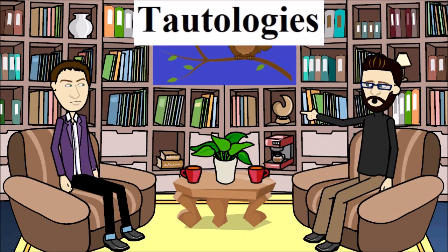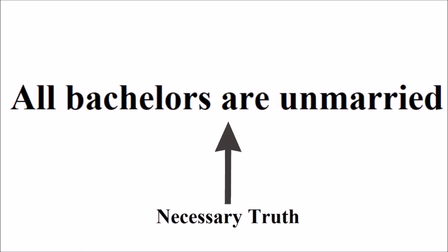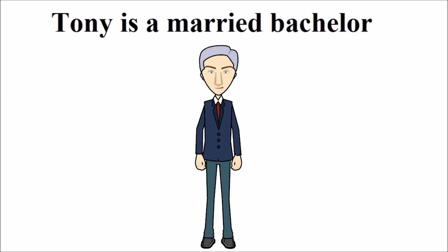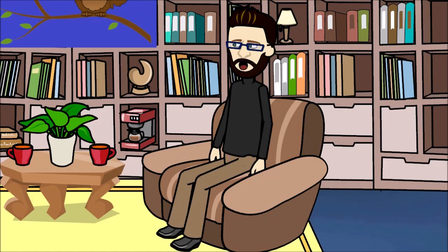Tautologies are seen as necessary truths. A common example is the statement: all bachelors are unmarried. This is a necessary truth because it is true by definition — to be a bachelor is to be unmarried. And so, if you were to say 'Tony is a married bachelor,' this becomes a contradiction, as you cannot have a married bachelor by definition. So, all bachelors are unmarried cannot be false.